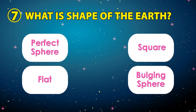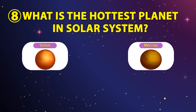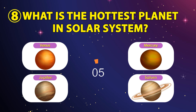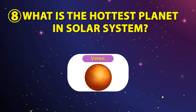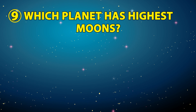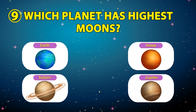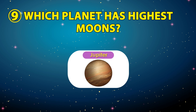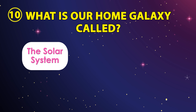The correct answer is bulging sphere. Number eight: which is the hottest planet in the solar system? The options are Venus, Mercury, Jupiter, or Saturn. The correct answer is Venus. Number nine: which planet has the highest number of moons? The options are Saturn or Jupiter. The correct answer is Jupiter.